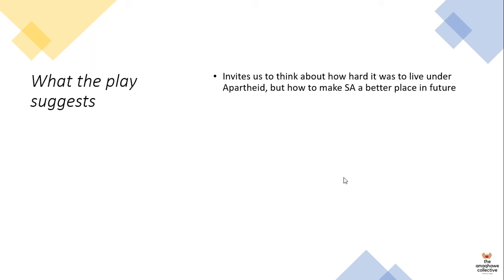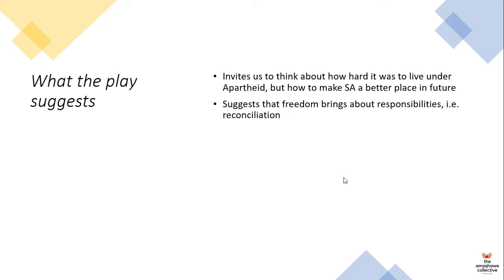The play invites us to think about how hard it was to live under apartheid, but also how to make South Africa a better place in future — that is at the center of the themes the play wants to bring about. The play also suggests that freedom brings about responsibilities, and the core responsibility in the new democratic South Africa is to reconcile with people. More broadly, reconciliation needs to take place, but also reparations need to be paid for the wrongdoings. The TRC, by airing the gruesome details of how people were tortured and tormented during apartheid, was very much perpetrators paying reparations for everything they did.